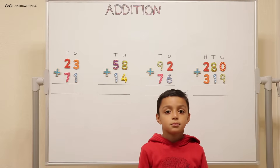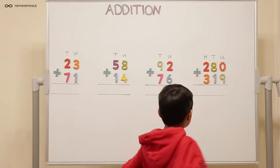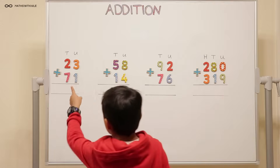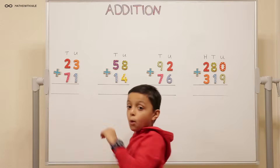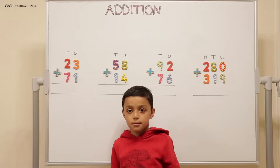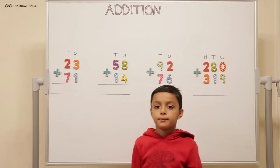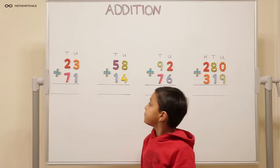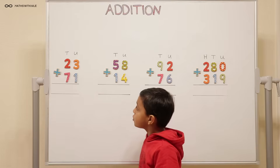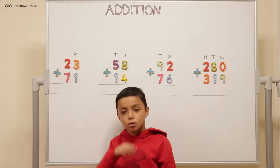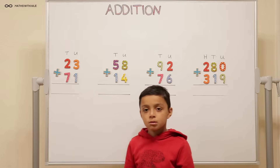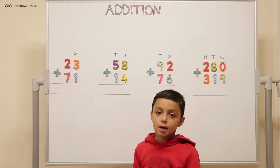Can you look at the first question and can you tell us what it says? It says 23 plus 71. 23 plus 71. Can you explain the number 23? Two tens and three units or ones. Very good. Two tens and three units, or we can say ones.